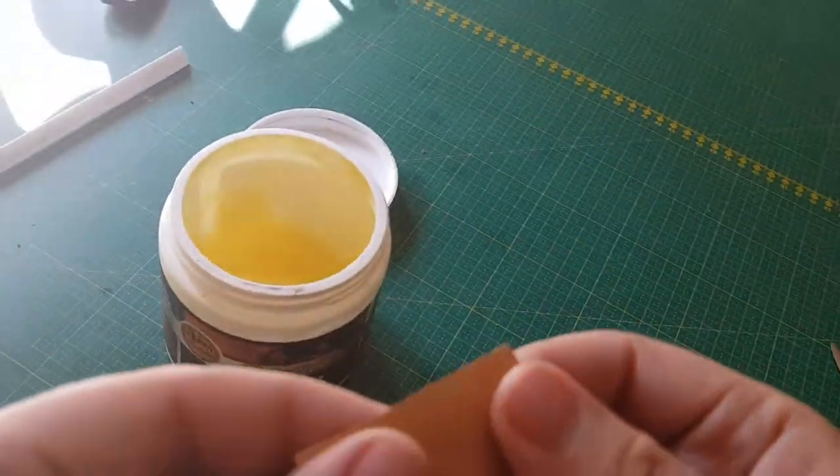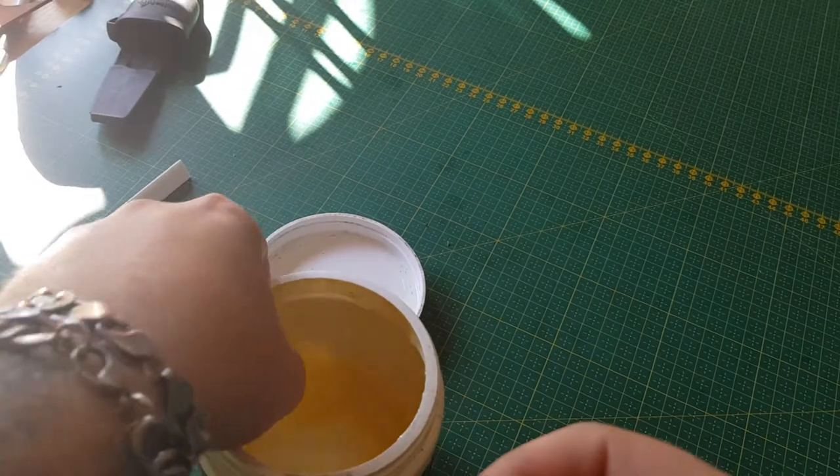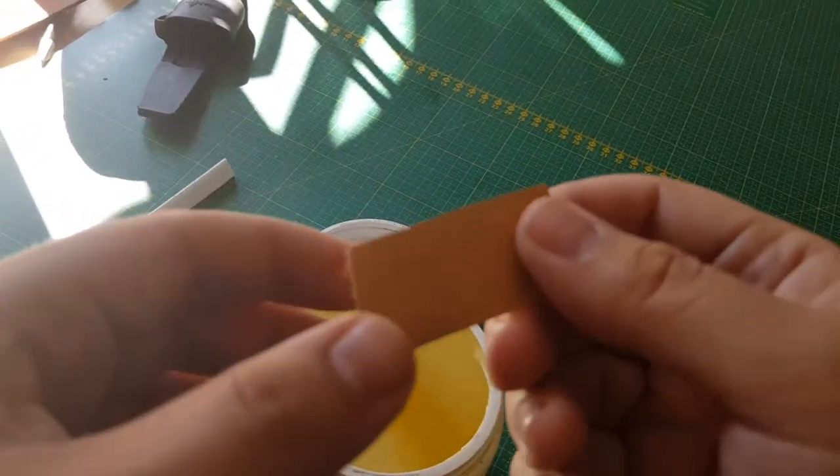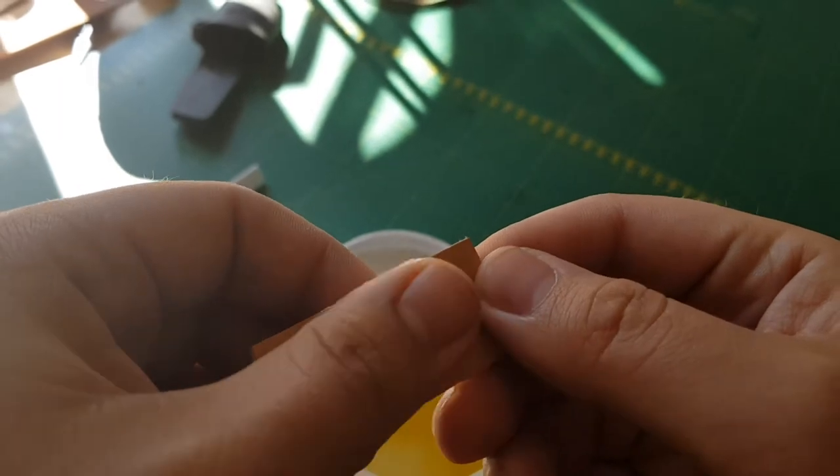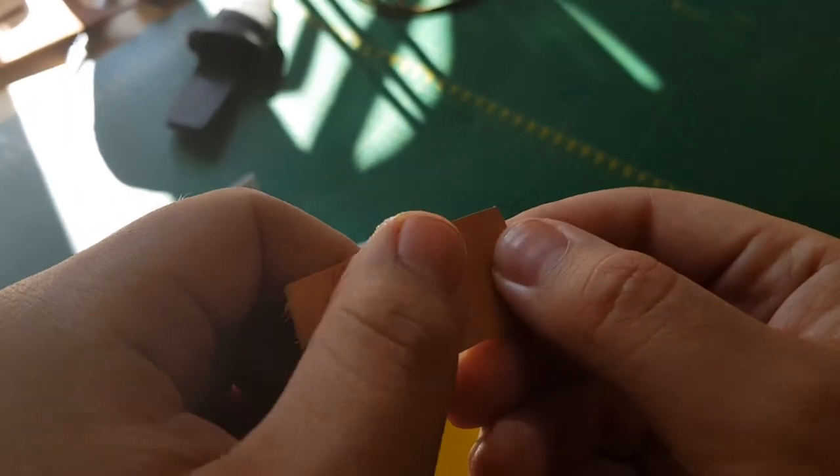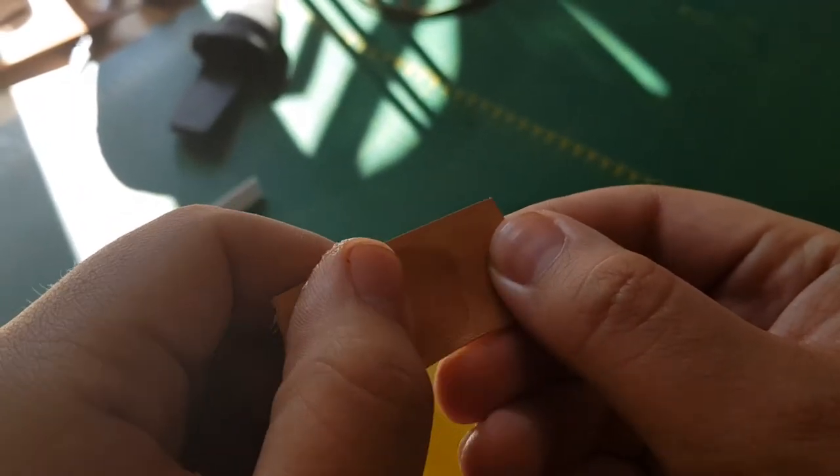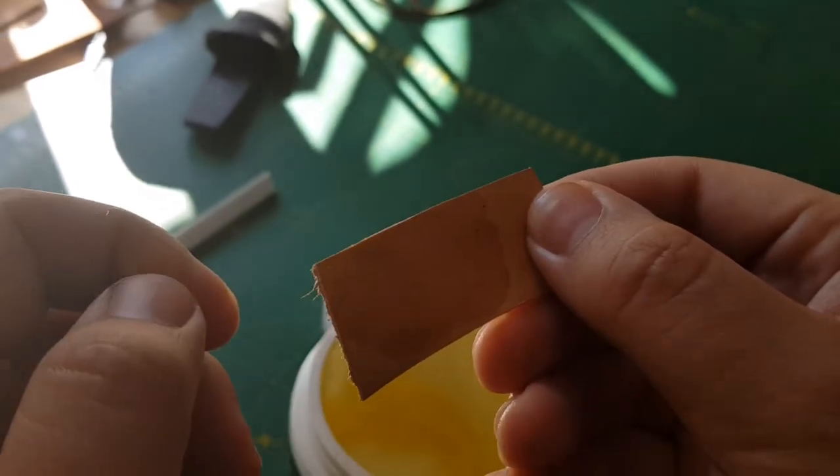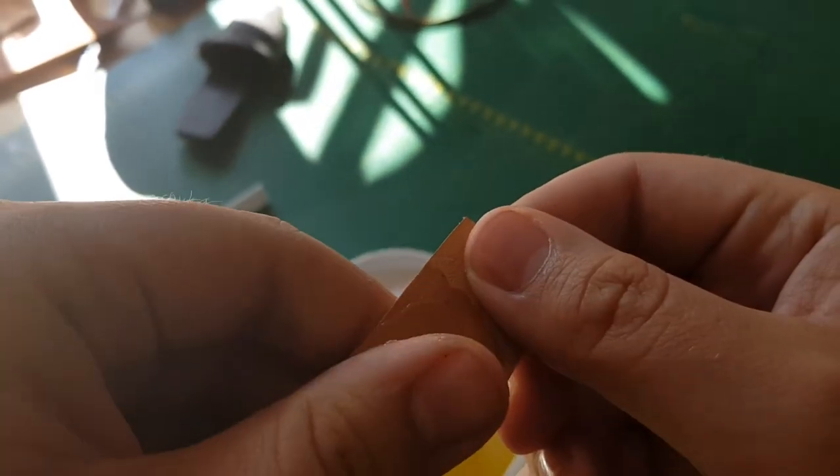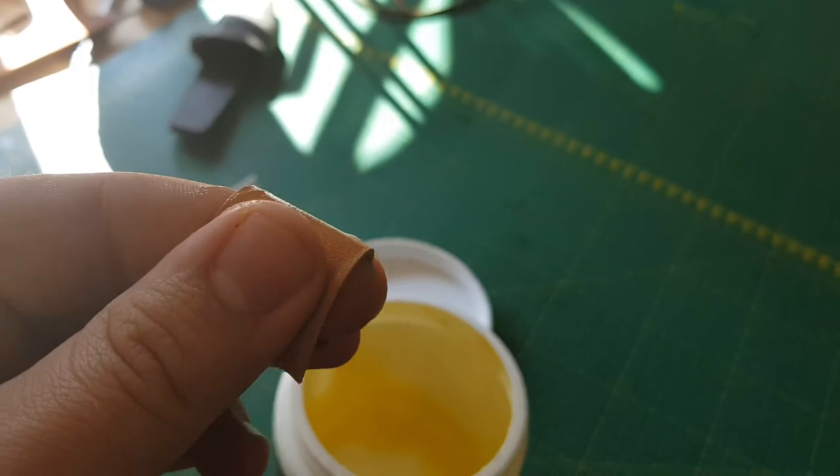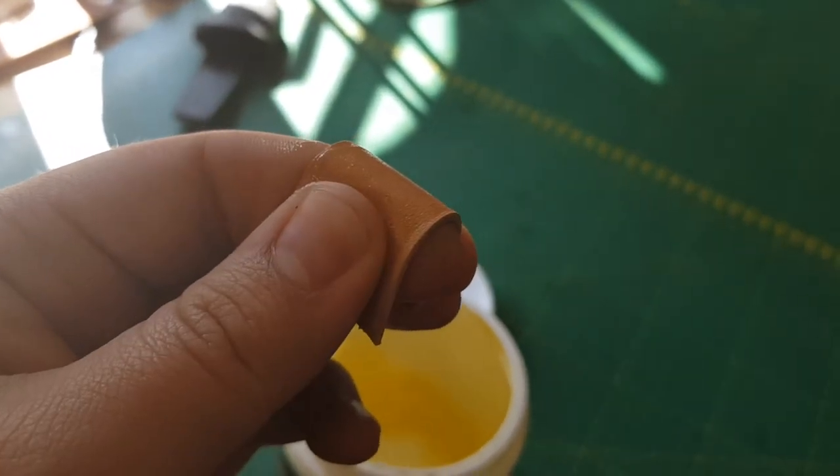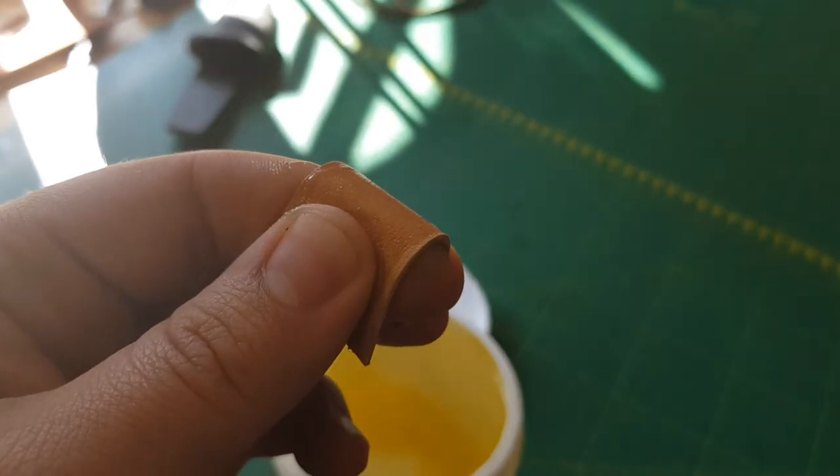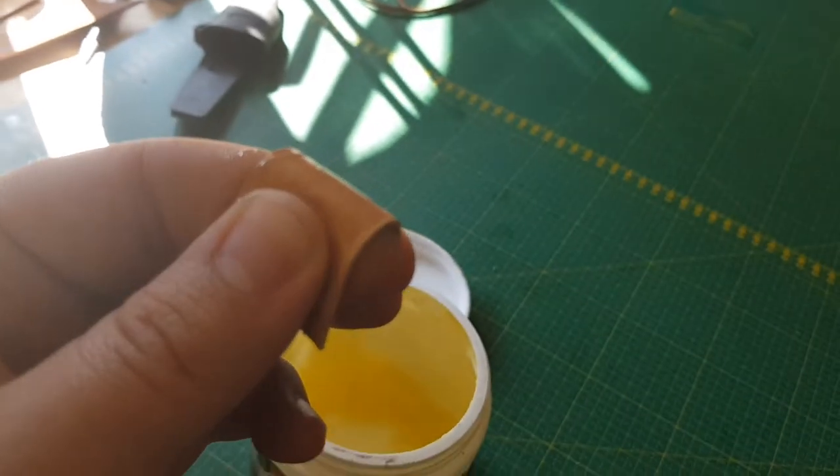So now what we're gonna do is we're gonna take a little bit of leather dressing and apply that to the finger guard. That makes the strand want to slide along here a bit more easily. And we're gonna wrap that around your finger like that. And we're gonna head on over to the strand.